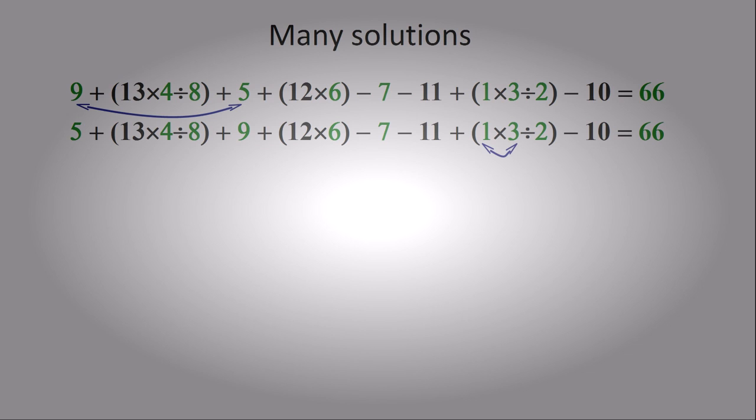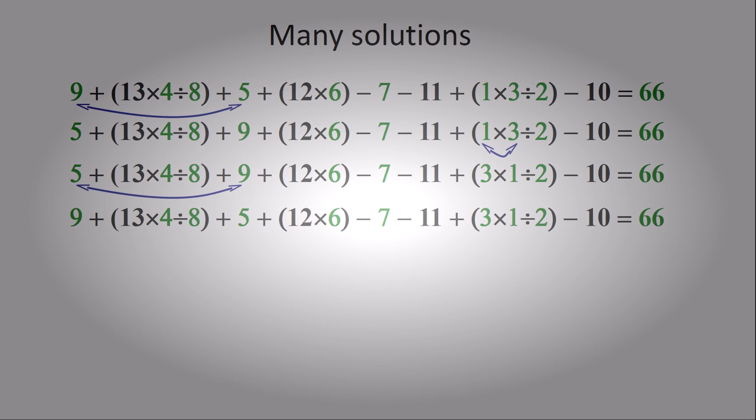Similarly, we can switch the two numbers which are being multiplied. That won't have any effect on our final expression. So that will give us another possible answer when we write the numbers in the grid. Of course, once we do that, we can switch the two numbers which are being added. So any time you come up with an answer, you can actually generate a total of four answers by placing the numbers in different positions because certain operations are commutative. That is, it doesn't matter which way you evaluate them. Addition and multiplication are commutative.